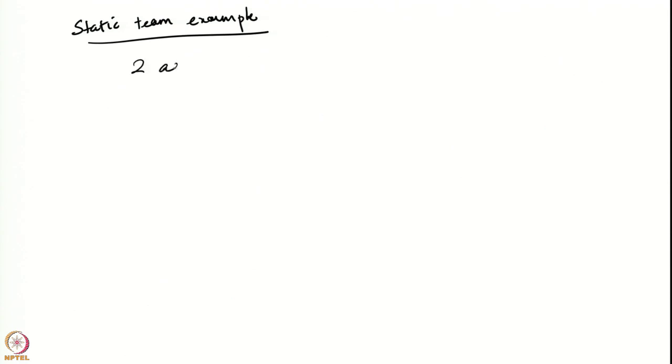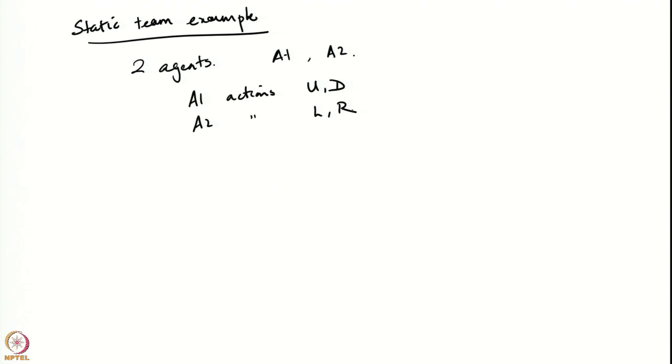Let us now begin with one example of a static team problem. In this example we have two agents — agent 1 and agent 2. Agent 1 can take only two actions: let us call those actions up and down. Agent 2 can similarly take only two actions: left and right.